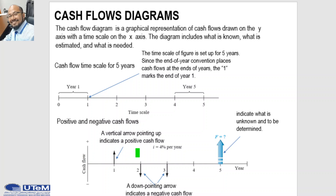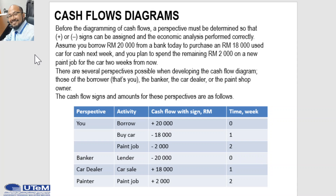The cash flow diagram contains two key elements: first, the time scale, and second, the arrows indicating either cash inflow or cash outflow — pointing up or pointing down with the corresponding value. Before diagramming cash flow, a perspective must be determined so that the plus or minus signs can be assigned and the economic analysis performed correctly.